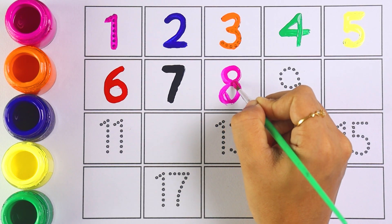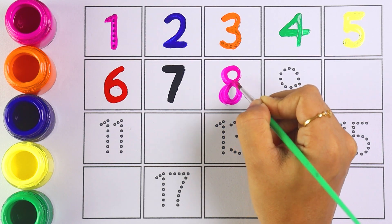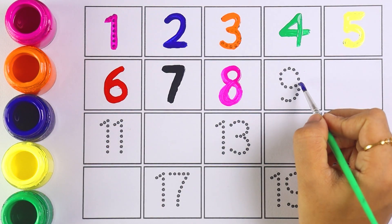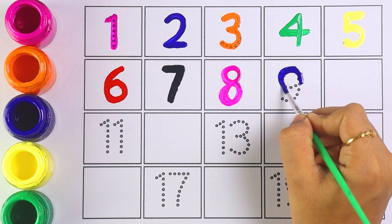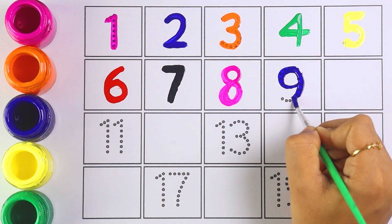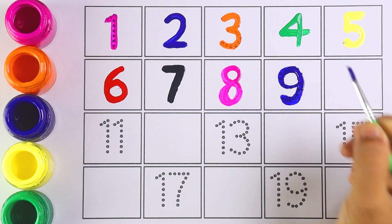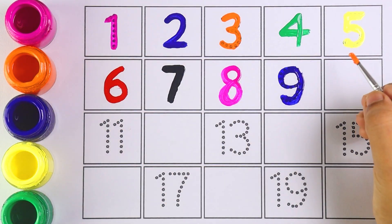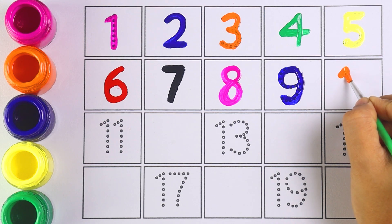Number nine, number nine. Can you all guess the next number? That's right, it's number ten. One and zero makes the number ten. Number ten.